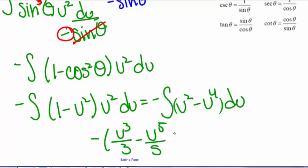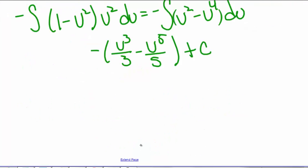Plus a constant. We can distribute the negative sign to get negative u cubed divided by 3 plus u to the fifth divided by 5 plus a constant.